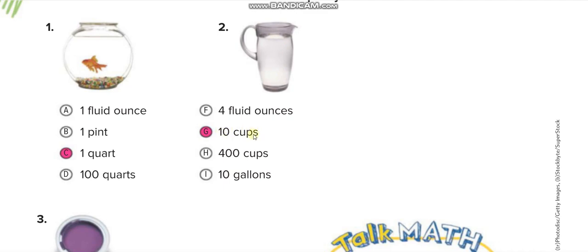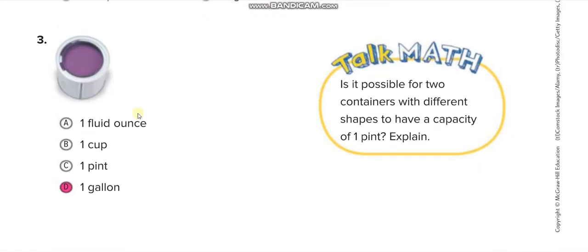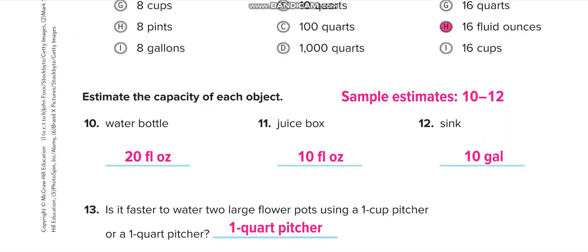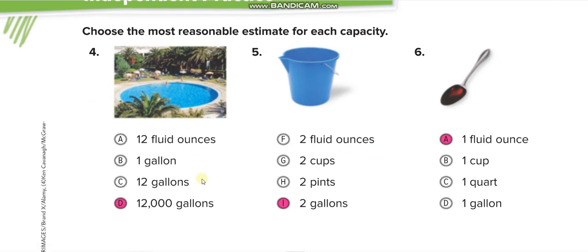We are actually giving reasonable estimates, not exact ones. This is a paint bucket, which is like one gallon. For this pool, of course not 12 gallons—it's 12,000 gallons. For this bucket, one gallon can fill it half, so almost two gallons.